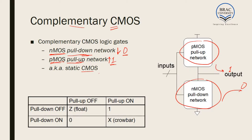Now let us consider what would happen at different on and off stages of pull-up and pull-down networks. If the pull-down network is off, the output cannot be zero because current cannot flow in this direction. If the pull-up network is also off, the output cannot be one because current cannot flow in this direction as well. So the output is neither zero nor one — this is called the floating condition.